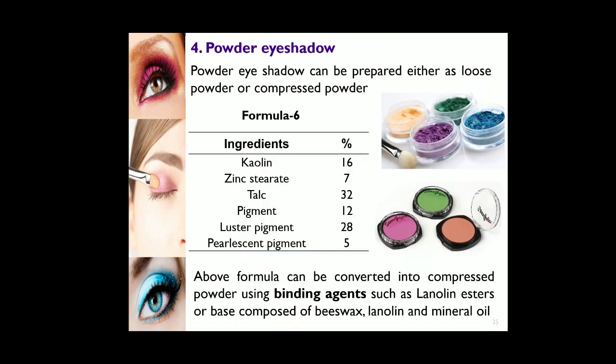Powder eye shadow consists of powder materials and can be used with certain binding ingredients to compress the powder into a container. It can be prepared either as a loose powder or a compressed powder. The formula from the slide can be converted into compressed powder by adding binding ingredients that form a compressed mass after compressing the parts.